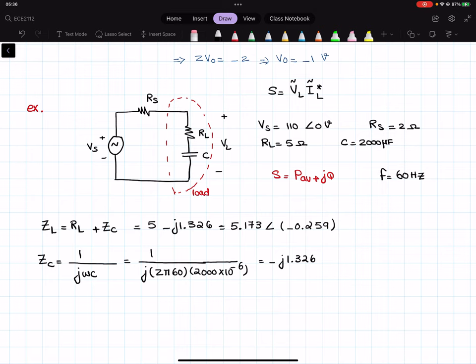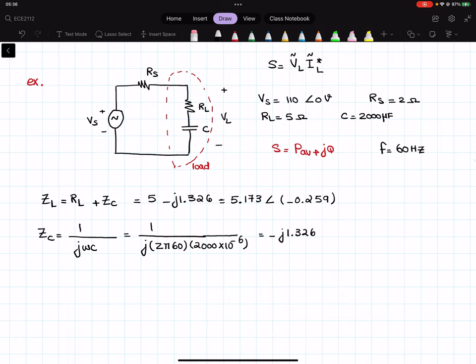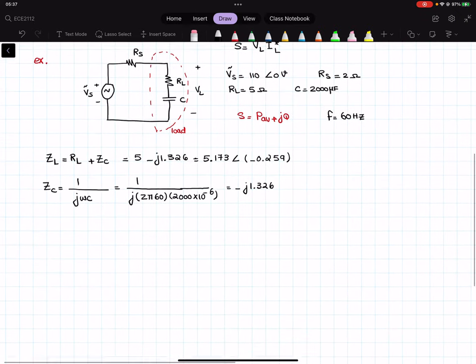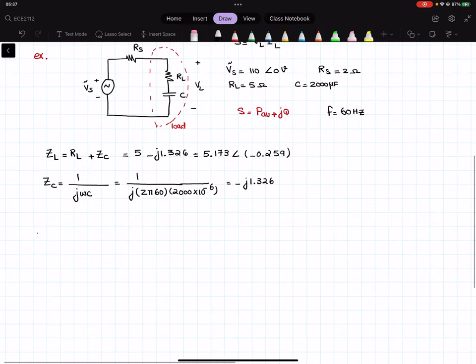So what I'm going to do here: Vs that is given in the question is actually in RMS. So if I use this Vs, I can find my RMS load voltage and RMS load current. So let's do it this way, let me make this smaller.